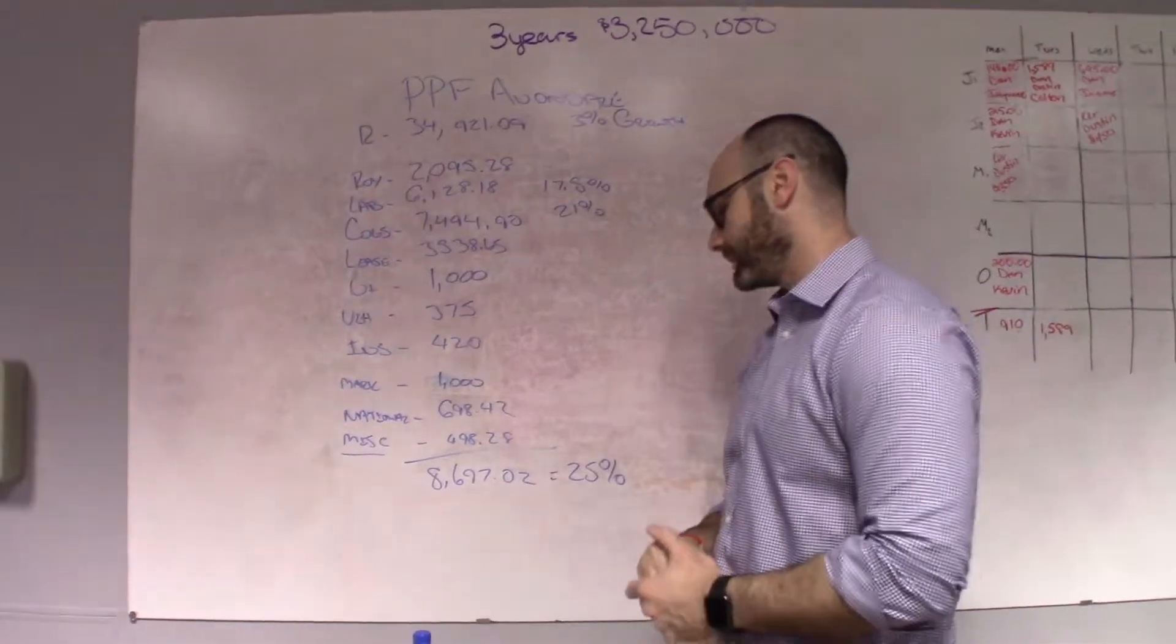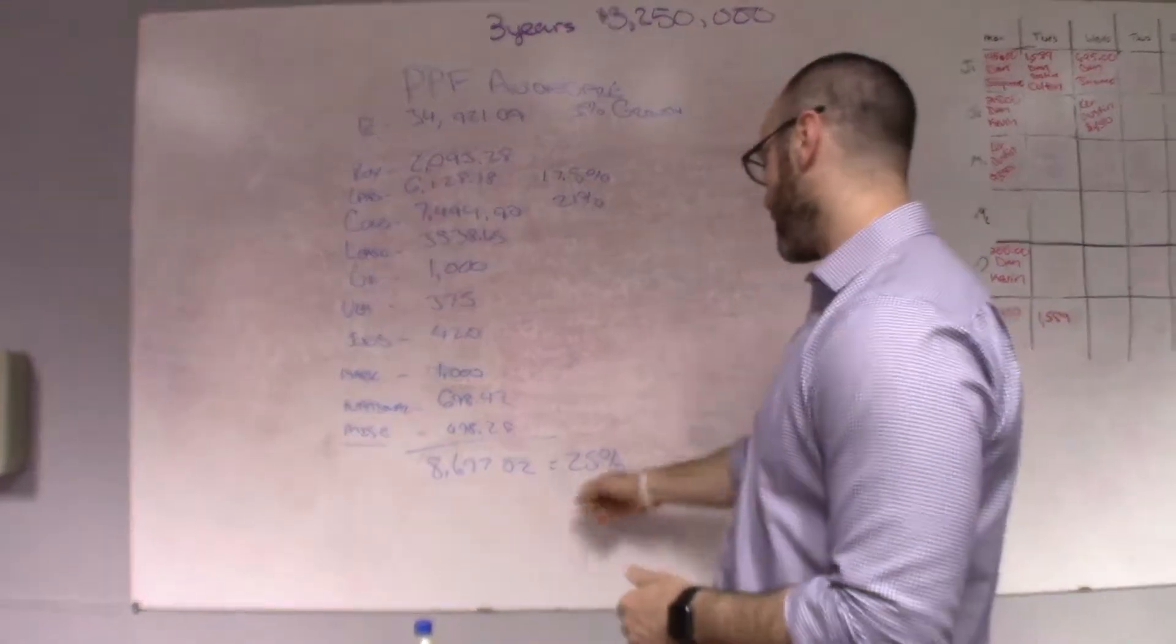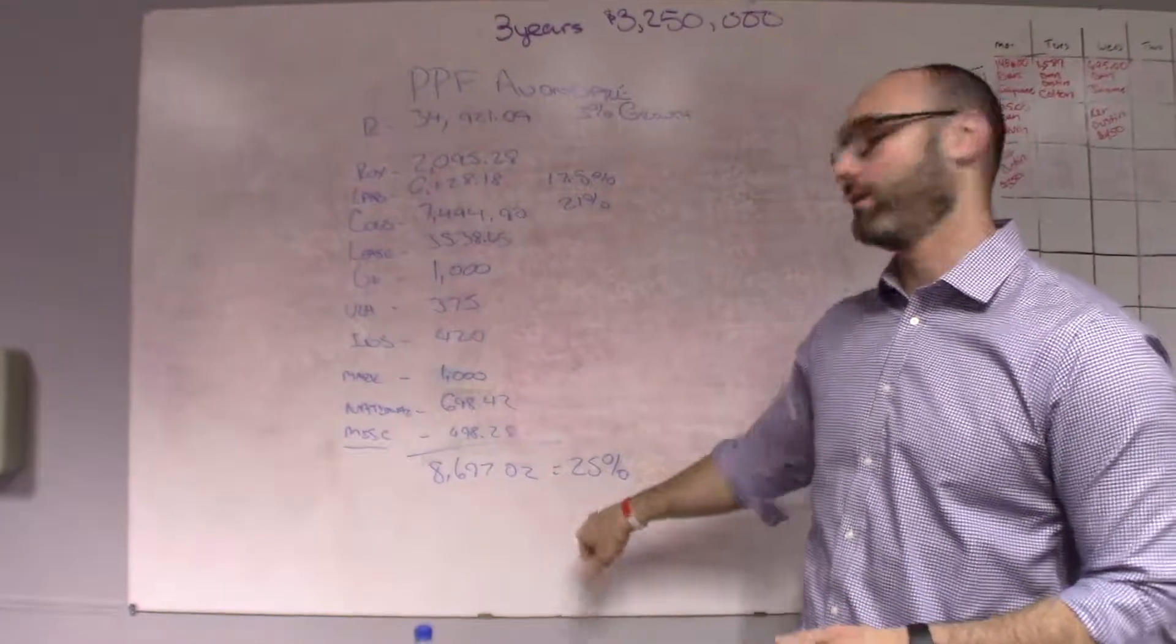So, last month, we put $8,697.02 to the bottom line, which equals 25%. Typically, we run about 23%, so we gain 2% there. I'm very, very happy about this.